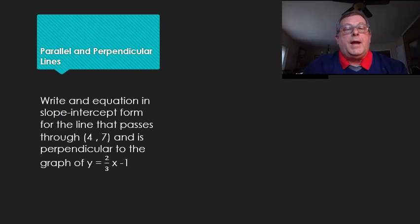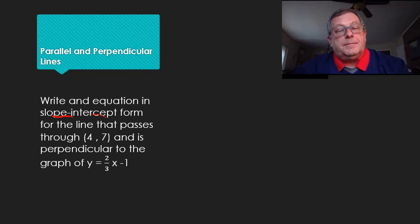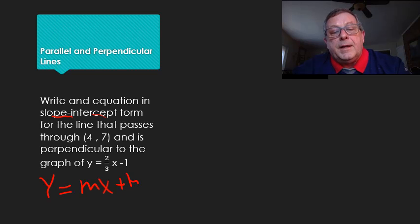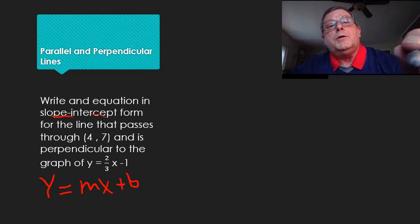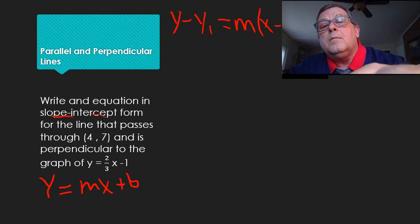Now we're being asked to write an equation in slope-intercept form for a line that passes through the point where x equals 4 and y equals 7, and this line is perpendicular to the line y equals 2 over 3 x minus 1. I want to end up with a slope-intercept form equation, so I'll use the point-slope formula: y minus y1 equals m times x minus x1.